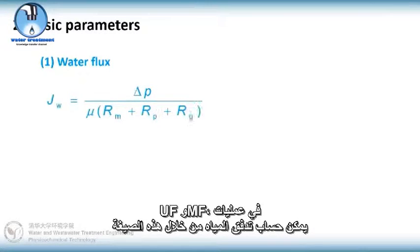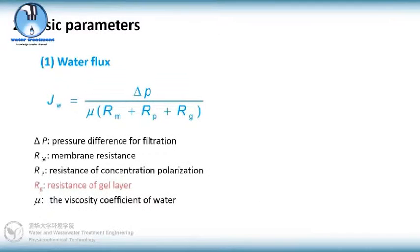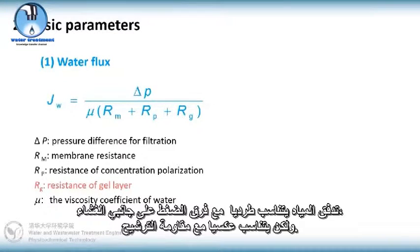In UF and MF processes, water flux could be calculated by this formula. The water flux is proportional to the pressure difference on both sides of the membrane, but is inversely proportional to the filtration resistance.